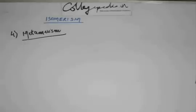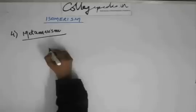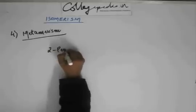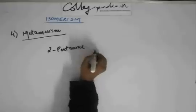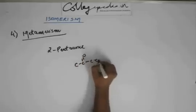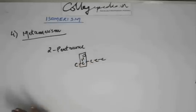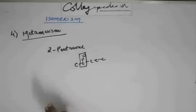Draw the metamers of 2-pentanone. If you have 2-pentanone, it has five carbons with a ketone on the second carbon. On one side you have methyl, on the other side you have propyl. You can change the distribution of carbons on both sides of the functional group to get a metamer.